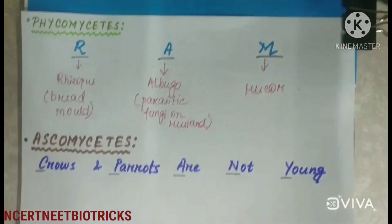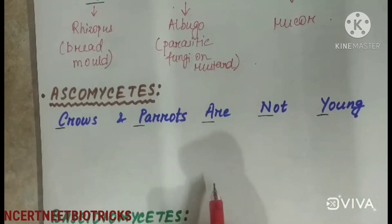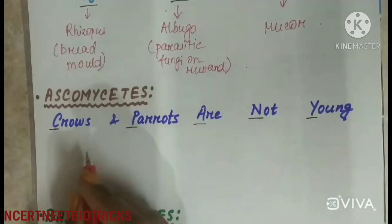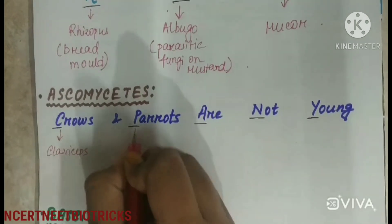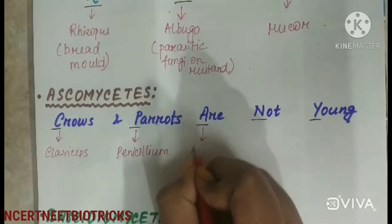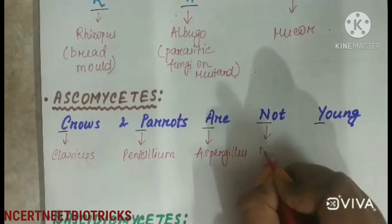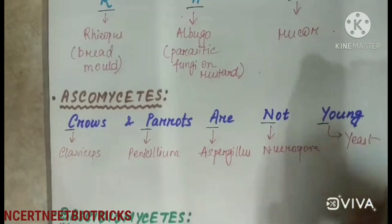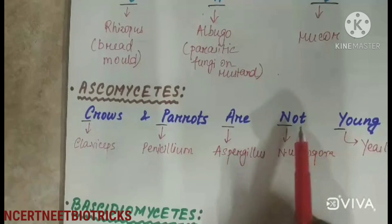Next is Ascomycetes. The mnemonic is 'crows and parrots are not young' — C for Claviceps, P for Penicillium, A for Aspergillus, N for Neurospora, and Y for Yeast.